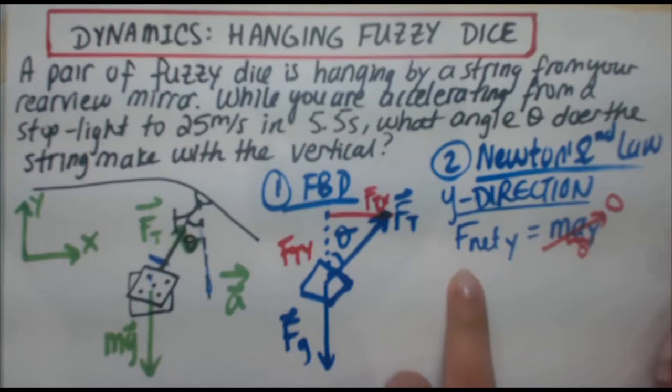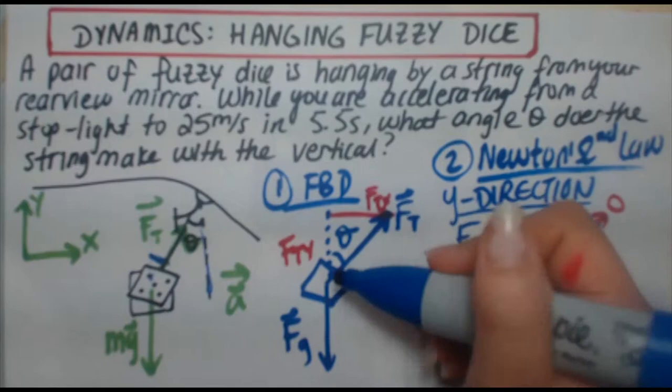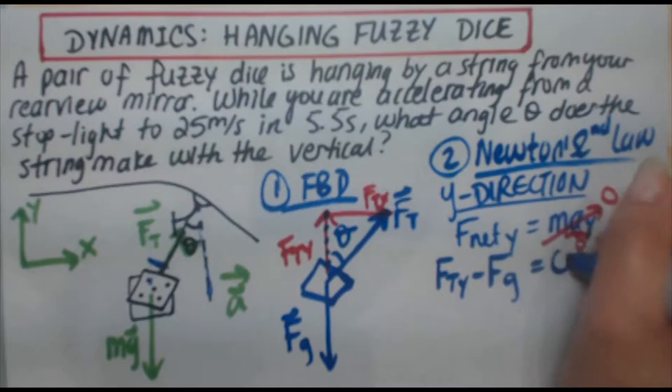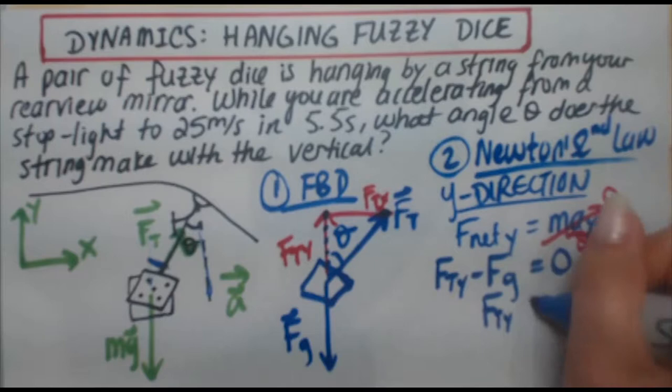Now the left side, the net force in the y direction, or the sum of the forces in the y, I can replace that with something else. In the y direction, I've got FTy going up, and I've got Fg coming down. So I'm going to do FTy minus Fg equals zero. Next step would be to add Fg to both sides and bring it over. FTy equals Fg.